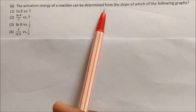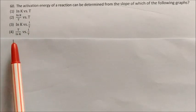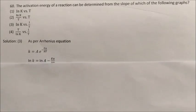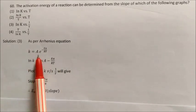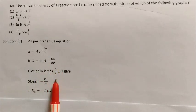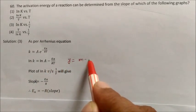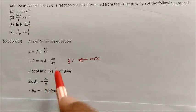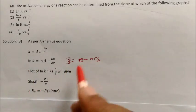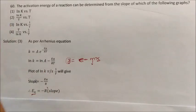Question: The activation energy of a reaction can be determined from the slope of which graph? The options are: k vs T, log k/T vs T, log k vs 1/T, and T/ln k vs 1/T. Taking the logarithm of the Arrhenius equation gives: log k = log A − Ea/(2.303R) × (1/T). Comparing with y = c − mx, where y = log k and x = 1/T, the slope m = Ea/R. So activation energy = −R × slope. The correct graph is log k vs 1/T. Answer: option 3.